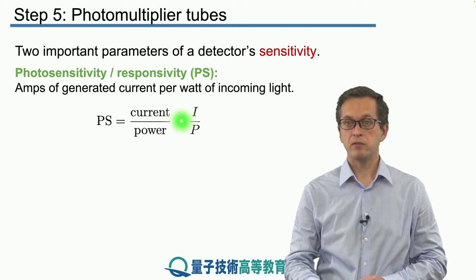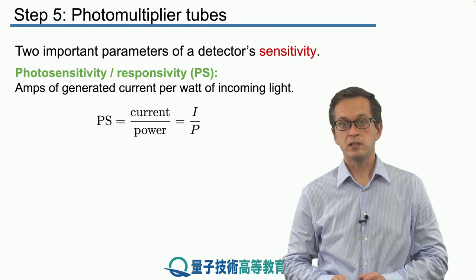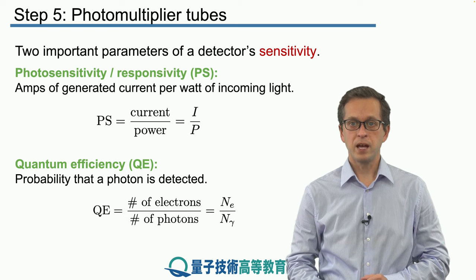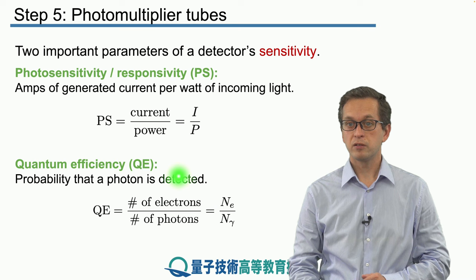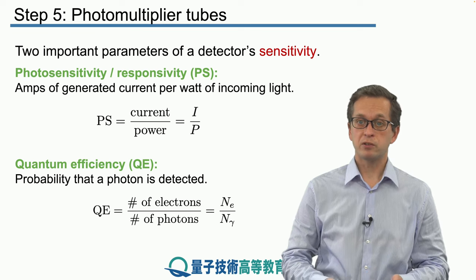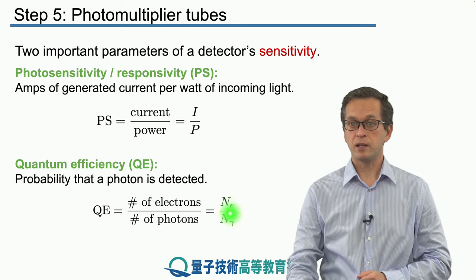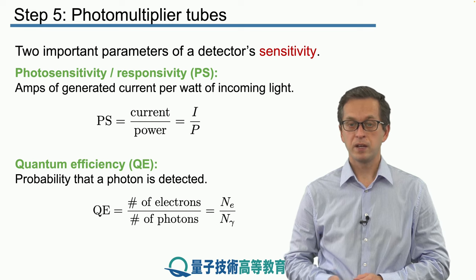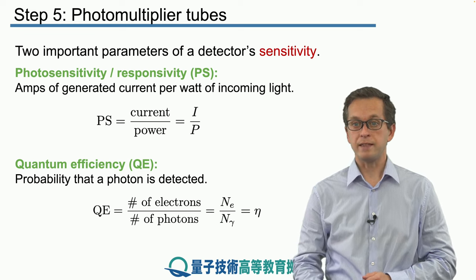The other important parameter, also quantifying a detector's sensitivity, is known as quantum efficiency, QE. That's basically the probability that a photon is detected, given as the ratio of the number of electrons ejected from the photocathode divided by the number of photons incident onto the detector. So if the number of ejected electrons equals the number of photons, quantum efficiency equals 1. It's given by N_e divided by N_gamma, where N_e is the number of electrons and N_gamma is the number of photons. In quantum technologies, we often use the Greek letter eta instead of the abbreviation QE.